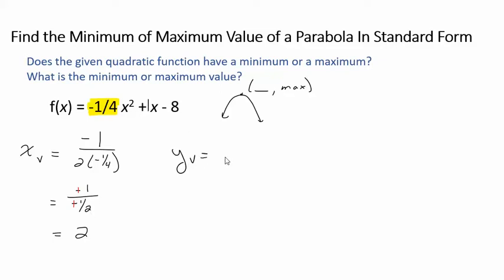All right, so the y value of the vertex is negative 1 fourth times 2 squared. Got to plug it in and find the y value. Plus 2 minus 8. Let's see what we get. We get